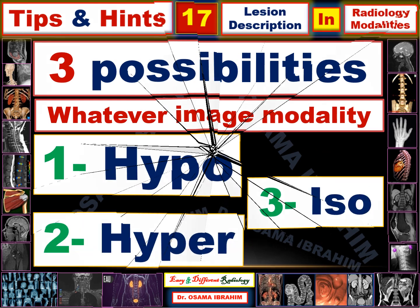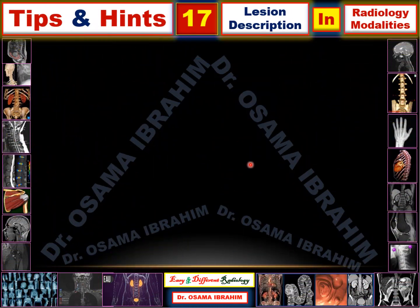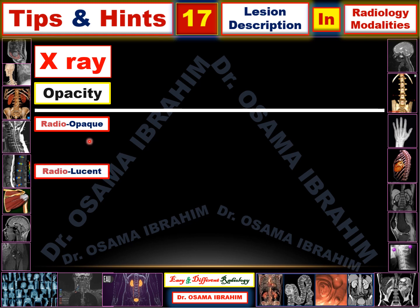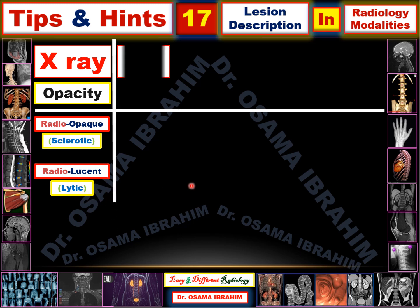For X-ray, I depend on opacity. I can describe lesions as a radio-opaque shadow or a radiolucent shadow. In X-ray, a radio-opaque shadow is also described as a sclerotic lesion, particularly for bony lesions, while a radiolucent shadow can be described as a lytic lesion.